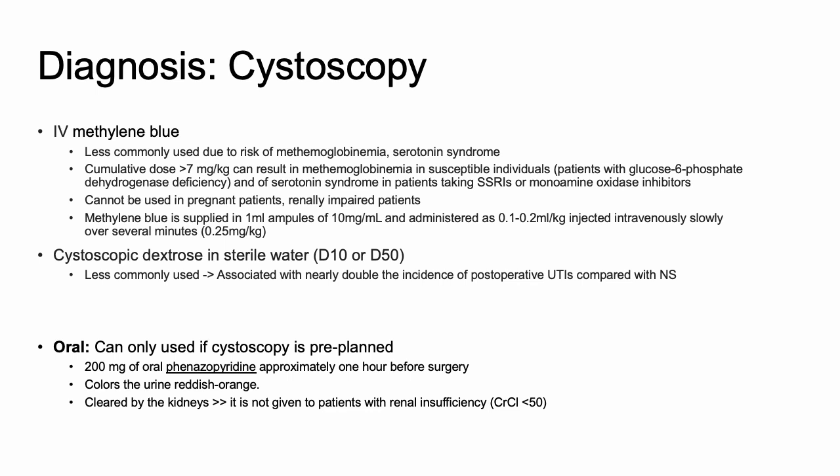Another agent that was used is dextrose in sterile water, but this has fallen out of favor — it is associated with nearly double the incidence of post-op UTIs compared with normal saline. If you're planning to do a cystoscopy, you can have the patient orally take Pyridium (phenazopyridine) 200 mg one hour before surgery. The urine will be a reddish-orange. This is cleared by the kidneys, so avoid it in anyone with a creatinine clearance less than 50.